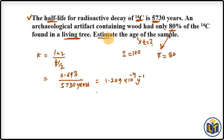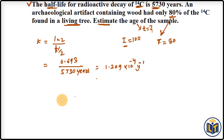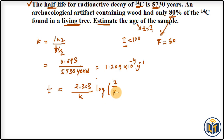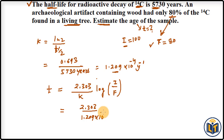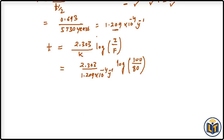Now we can apply the formula for the first order of reaction. Since we have the initial and final amounts, the formula is: T = 2.303 / K × log(initial amount / final amount). Plugging in the values: K = 1.209 × 10⁻⁴ per year, initial amount = 100, and final amount = 80.